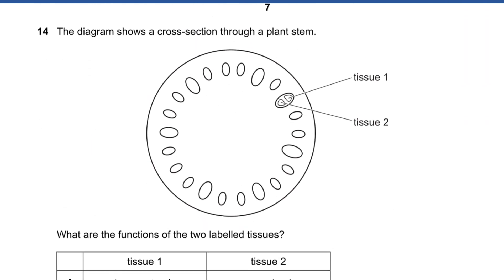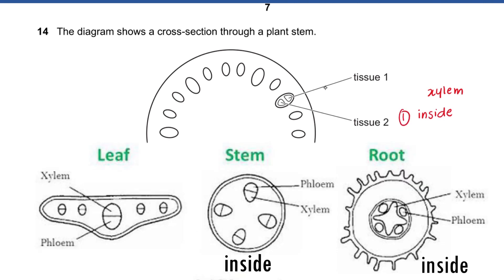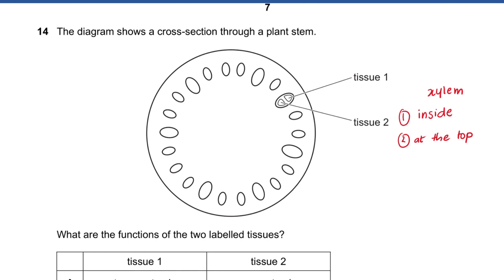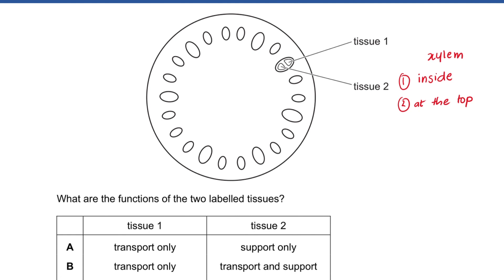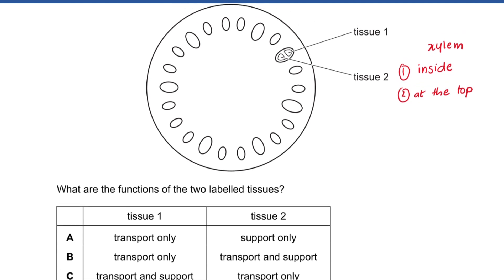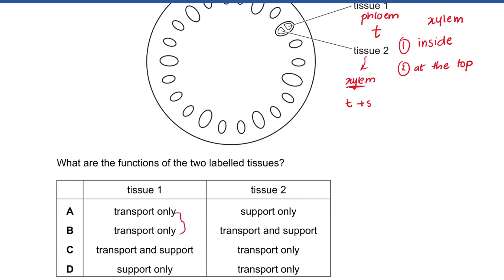Question 14: The diagram shows a cross section through a plant stem with tissue one and tissue two. To remember the positions of xylem and phloem: xylem is always inside or at the top, phloem is always outside or at the bottom — like a queen with bodyguards. Tissue two is inside, so it's xylem; tissue one is outside, so it's phloem. Xylem transports and supports; phloem only transports.